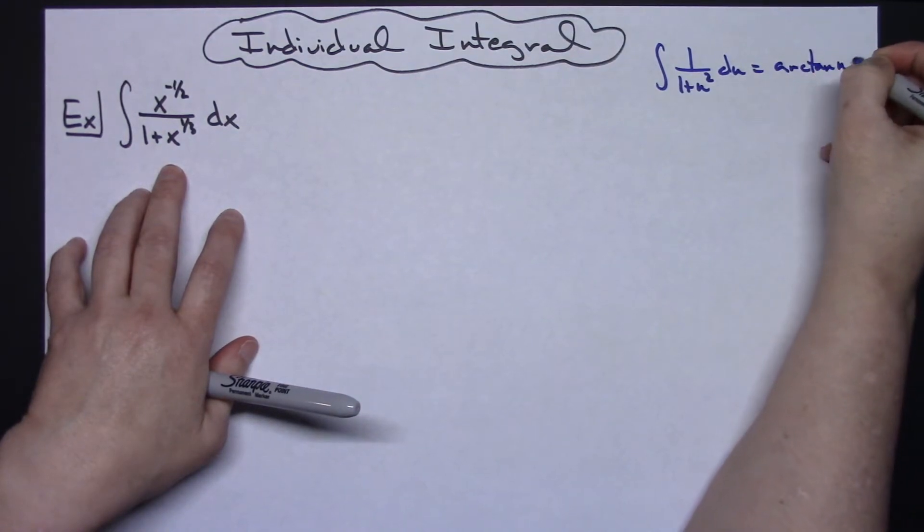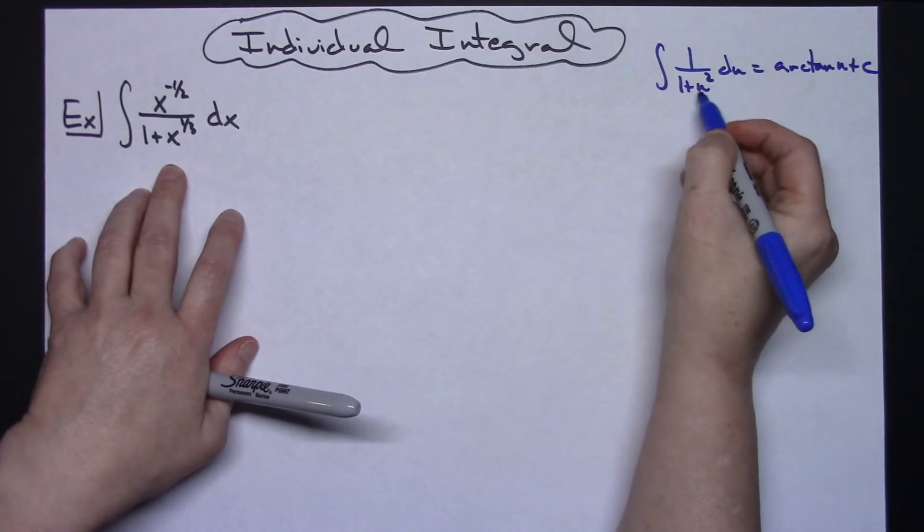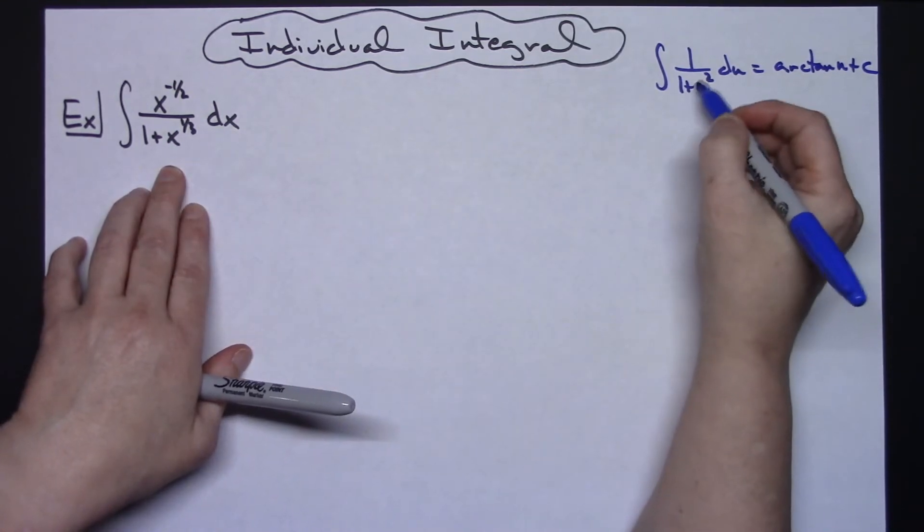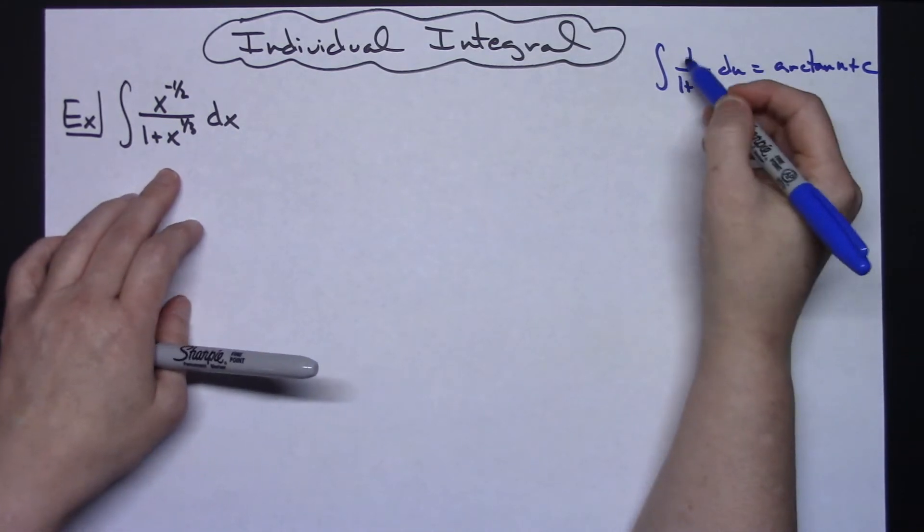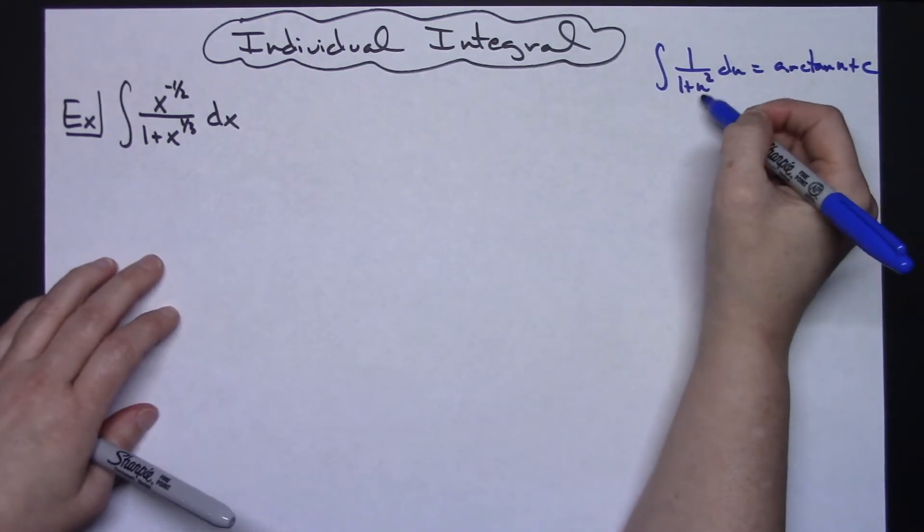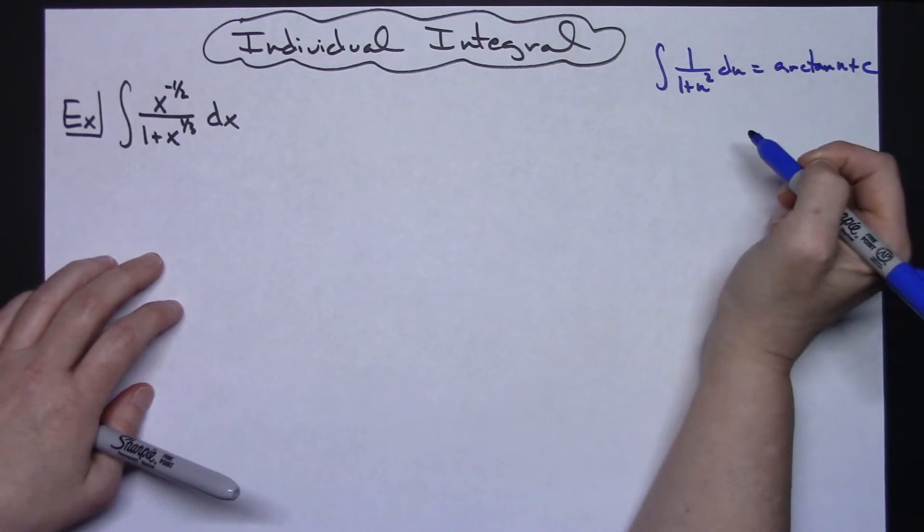And so that's one that we know. And so if I can get this in such a way that I've got a u squared underneath there, and obviously get that 1 on top as well, then I'm going to probably be able to integrate this.